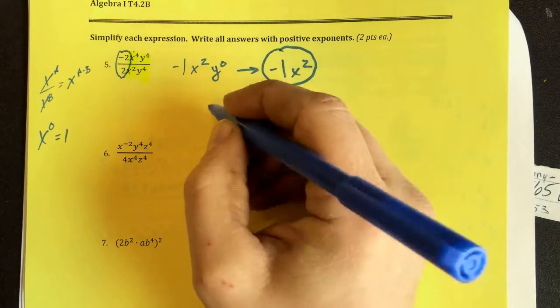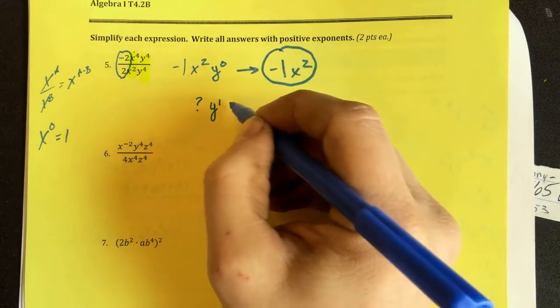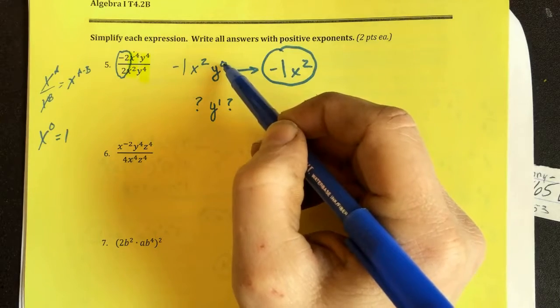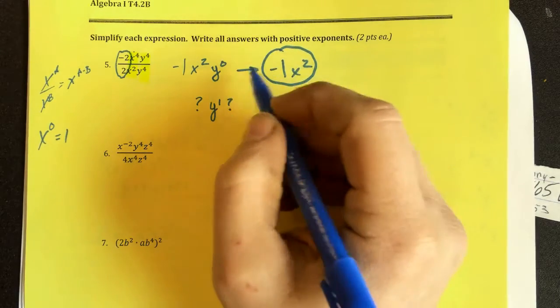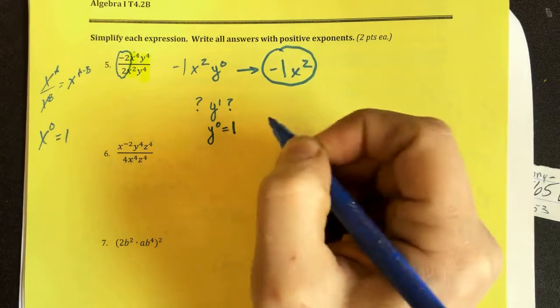Some of you, incorrectly, are writing this. Y to the 1. No, no. 4 minus 4 is 0. Anything to the 0 power is 1. Not that the exponent becomes 1. The value of y to the 0 is the whole number 1.